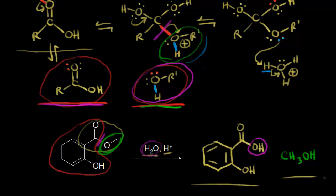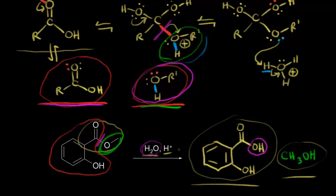Acid-catalyzed ester hydrolysis — this reaction is at equilibrium. You could push the equilibrium to the right. If you remember from the Fischer esterification video, this is what we used to make our wintergreen — we used methanol and salicylic acid to produce our wintergreen. Everything depends on reaction conditions in terms of shifting the equilibrium.